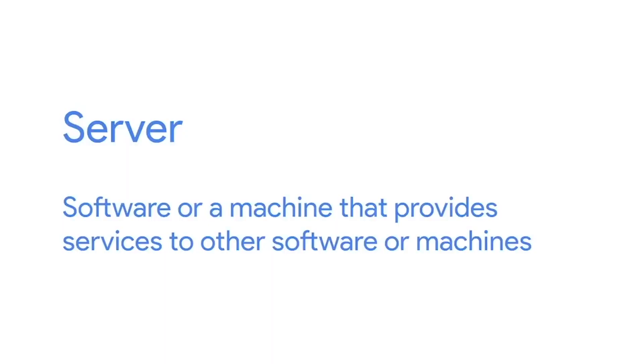A server is essentially software or a machine that provides services to other software or machines. For example, a web server stores and serves content to clients through the internet. You can access a web server through a domain name like google.com. An email server provides email services to other machines, and an SSH server provides SSH services to other machines and so on. We call the machines that use the services provided by a server clients. Clients request the services from a server, and in turn, the servers respond with these services.